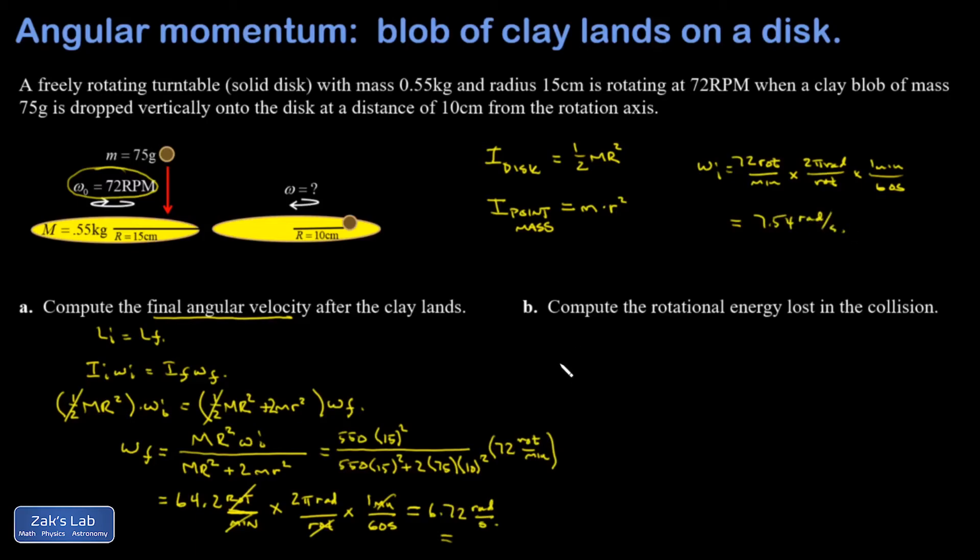Let's find out how much kinetic energy was lost in this collision. So it shouldn't be any surprise when you look at an inelastic collision that you would have energy lost. It's just this collision is rotational instead of linear.